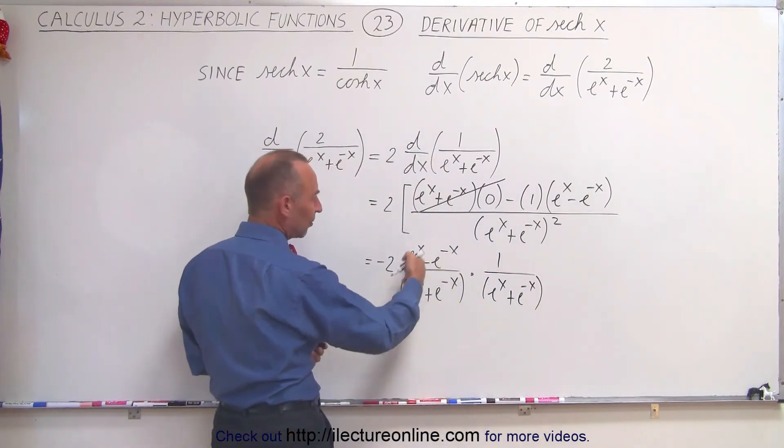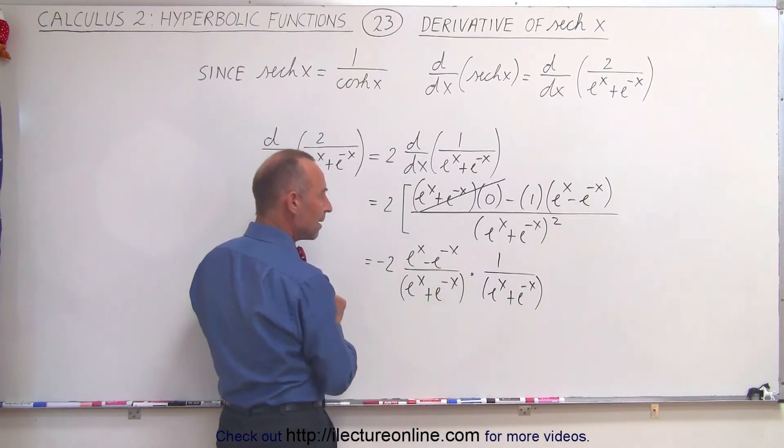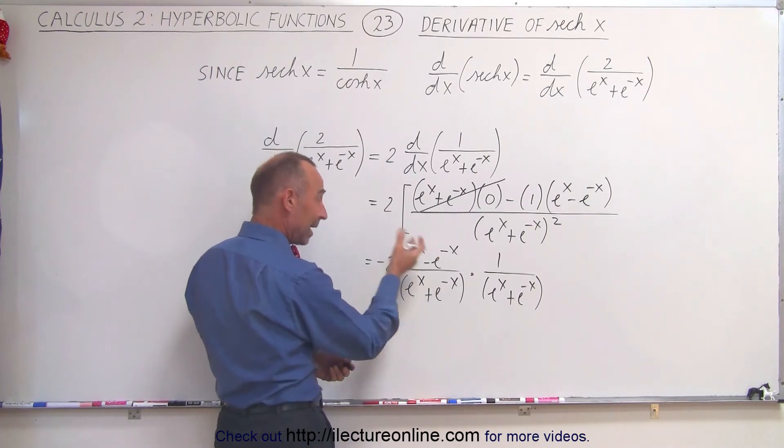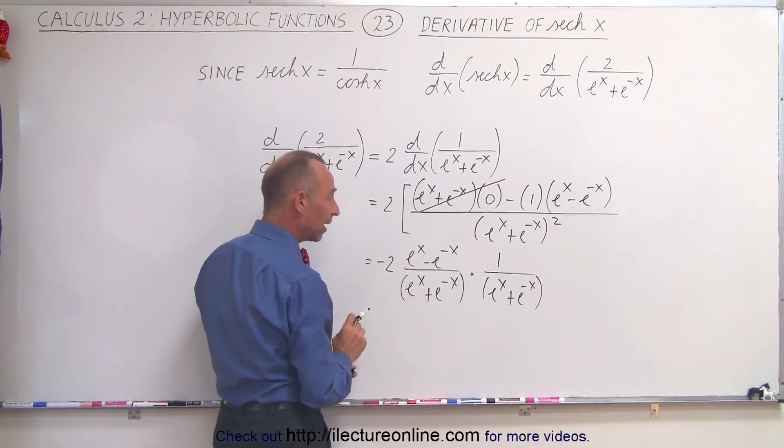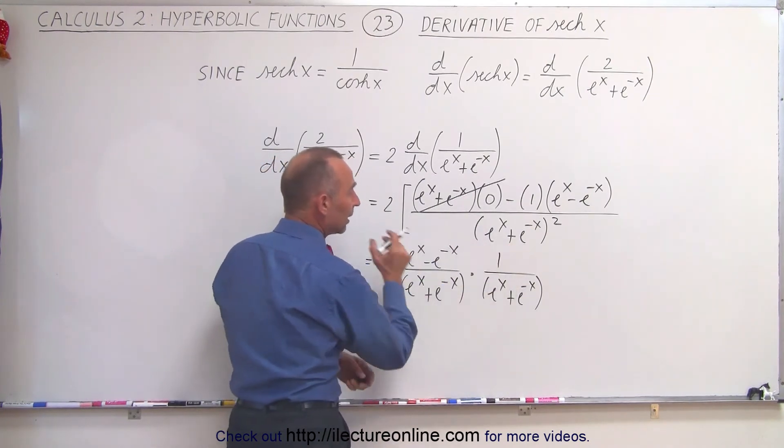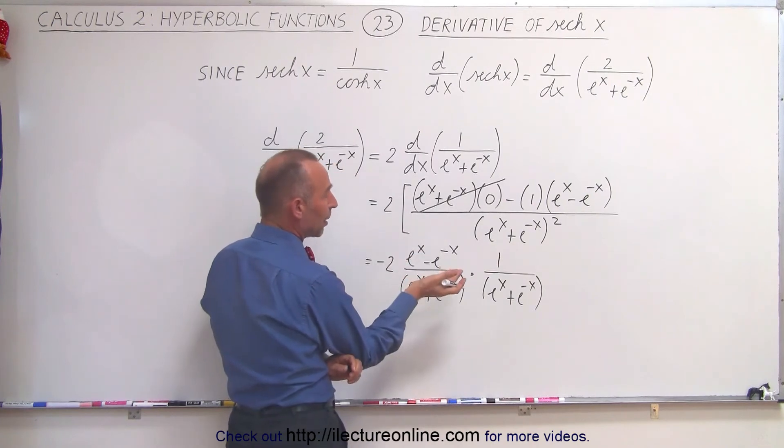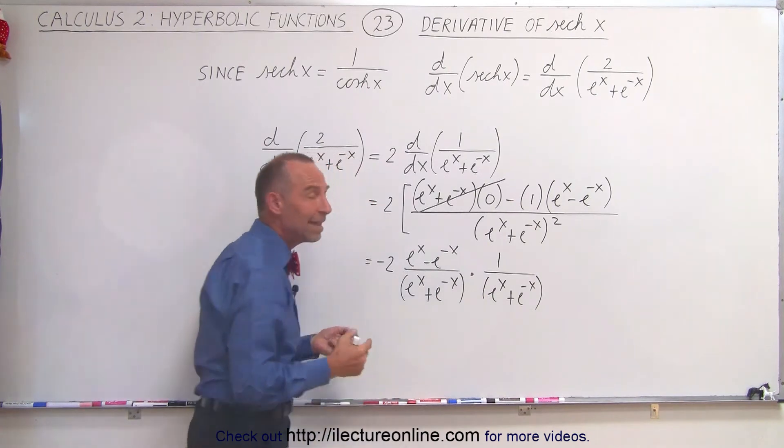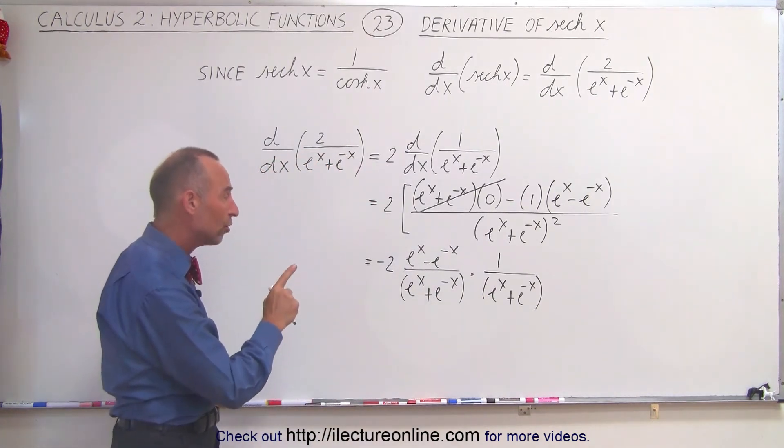Doing that, we realize that this here is really the hyperbolic tangent, because it's a sine over the cosine. And this here is almost the inverse of the hyperbolic cosine.